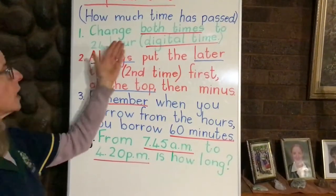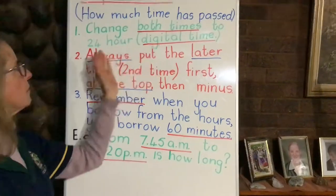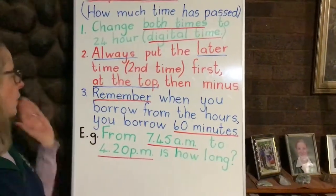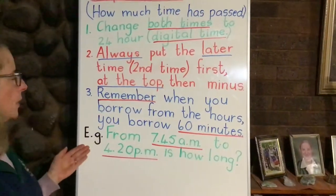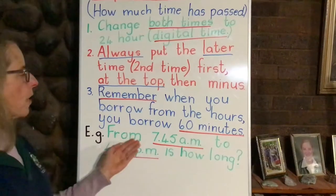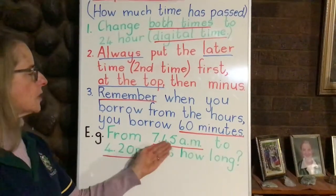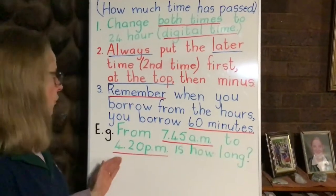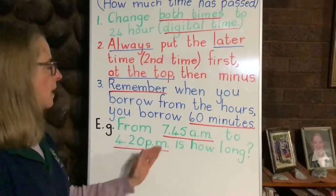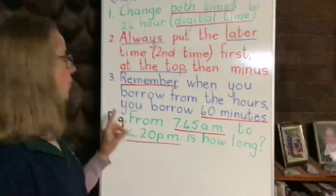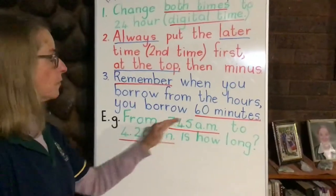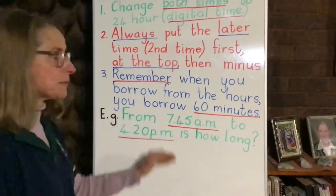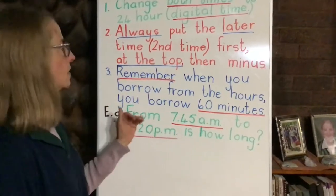The first rule: change both times to 24-hour digital time. So if we look at our example here — from 7:45am to 4:20pm, how long is that? That means we must convert or change both these times to digital time.